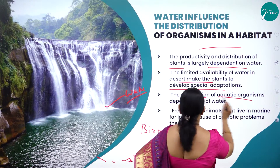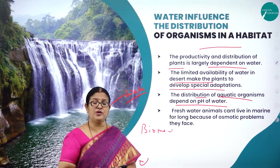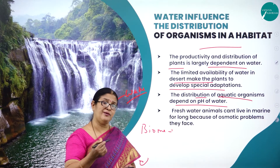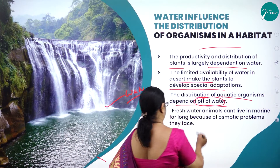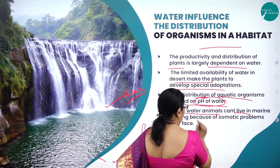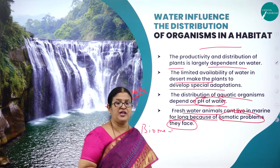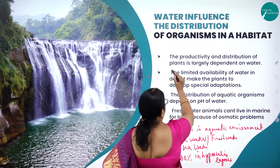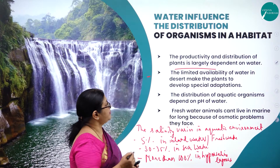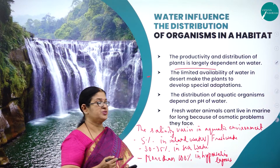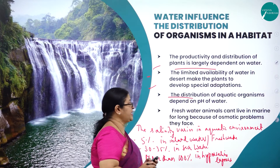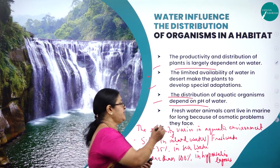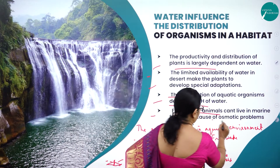The distribution of aquatic organisms also depends on the pH of water. For example, we have marine water and freshwater — freshwater forms cannot survive in marine water and vice versa, because of osmotic problems caused by the higher salt content of marine water. Salinity varies in aquatic environments: about 5% salinity in freshwater (inland water), 30–35% in sea water, and more than 100% salinity in what are called hypersaline lagoons.